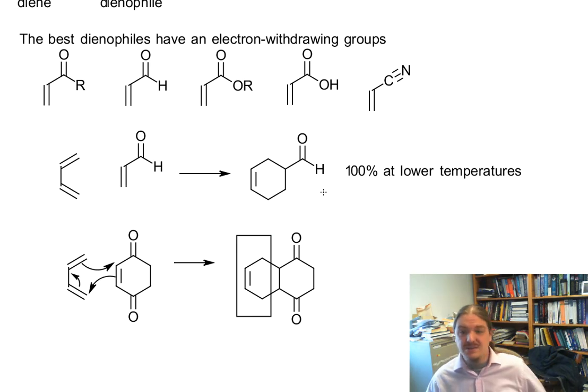If you're looking at these two examples, you might see that we are generating new chirality centers in these products now that the dienophile has some substituents on it. You're right about that. And that's what the next video is going to be about, the stereochemical outcome of these reactions. So thanks for watching.